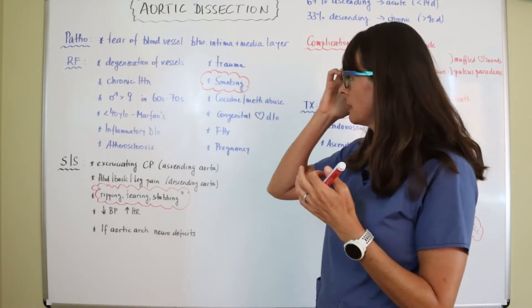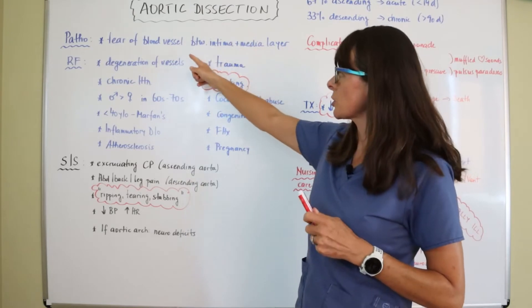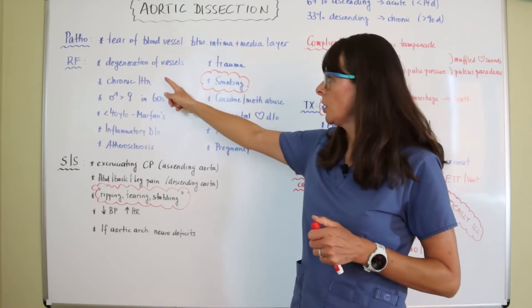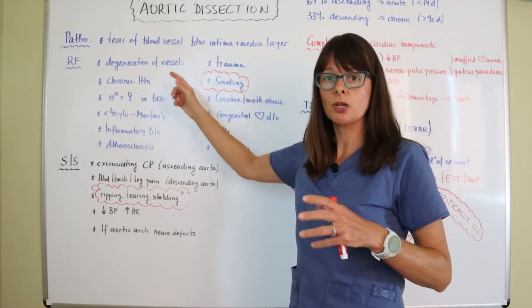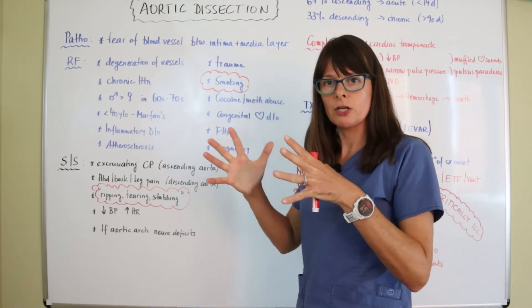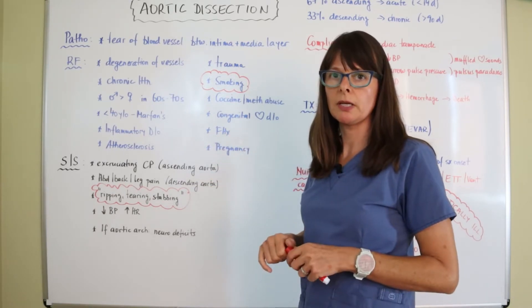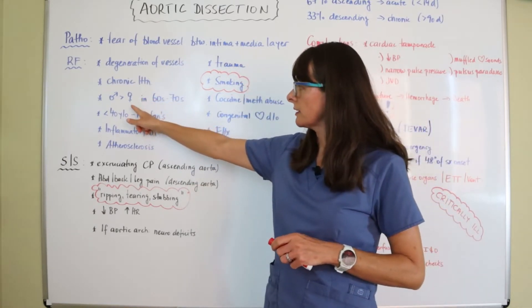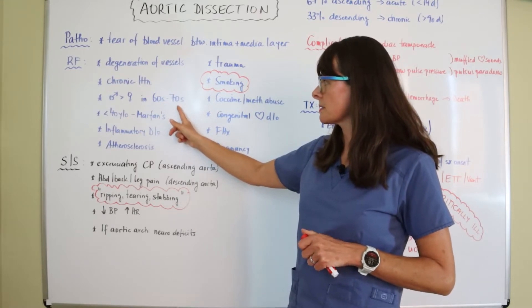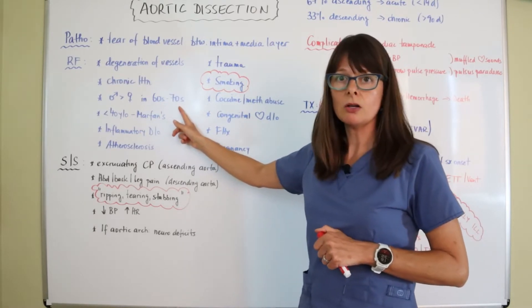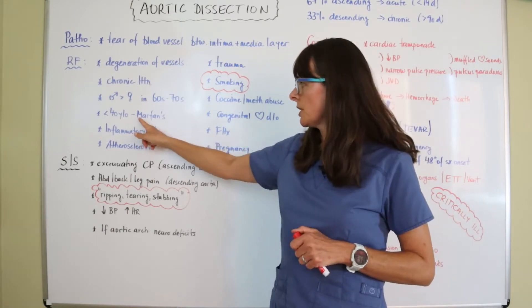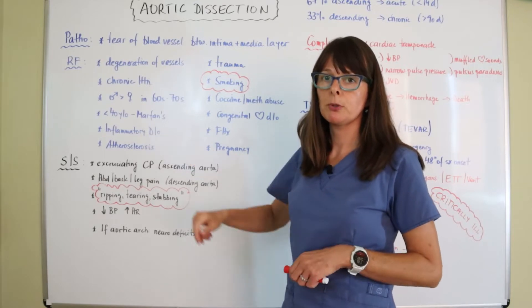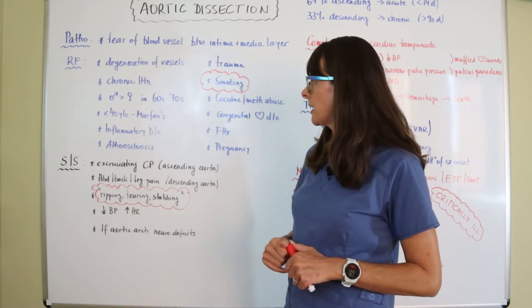So risk factors for developing this aortic dissection, this tear between these two layers is just the degeneration of vessels over time, history of chronic hypertension, where that pressure is constantly elevated, that eventually it kind of peels apart between the innermost and the medial layer here. And then males are more affected than females. And typically in the sixties and seventies is when this occurs, but it can also happen in patients less than 40 years old and those that have Marfan syndrome, which is a connective tissue disorder that puts patients at higher risk for this aortic dissection.